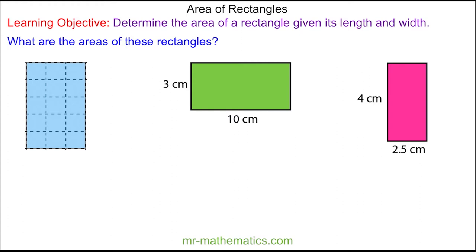We can begin by counting the squares inside. So for our blue rectangle we have 3, 6, 9, 12, and 15 units squared.